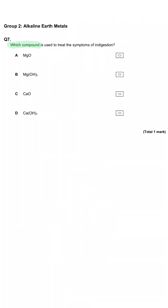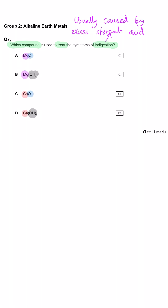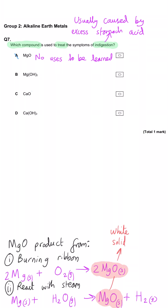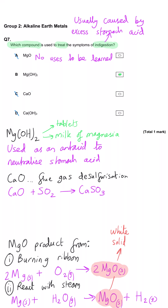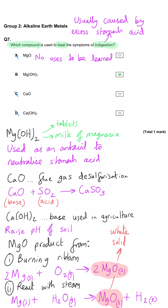Which compound is used to treat the symptoms of indigestion? The four options come in two pairs: two magnesium compounds and two calcium compounds, two oxides and two hydroxides. Magnesium oxide is not a Group 2 compound with a use you need to know. Magnesium hydroxide is the correct answer — it is used in some indigestion tablets as an antacid to neutralise excess stomach acid. Calcium oxide is used to react with sulphur dioxide in power stations, and calcium hydroxide is used in agriculture to neutralise acidic soils.